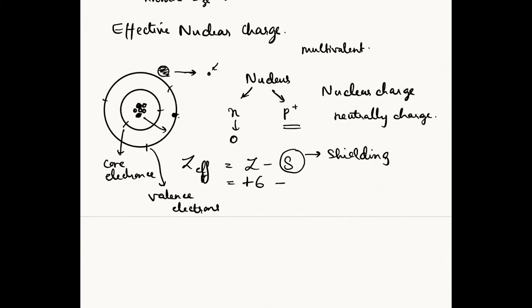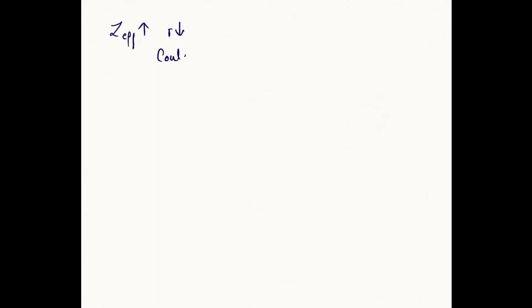The charge effectively acting on the outermost electron: the charge of the nucleus is plus six, minus the two core electrons each having a charge of minus one — so the effective nuclear charge is plus four for the outermost electron in a carbon atom. This leads to a very important statement: as the effective nuclear charge increases, the radius of the atom decreases.